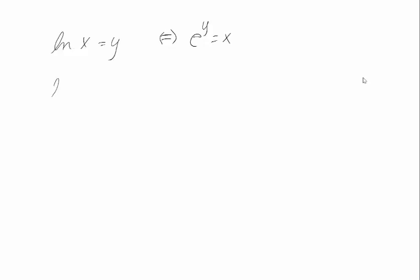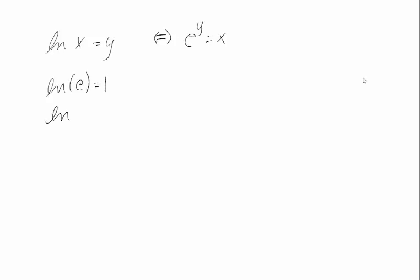So in particular, if I want to find the natural log of e, that means e to some power is e, and of course e to the 1 is e. If I want to find the natural log of 1, that means e to some power is 1, or e to the 0 is 1. And if I have log of e to some power, whatever that may be, this is just going to be that power of e.